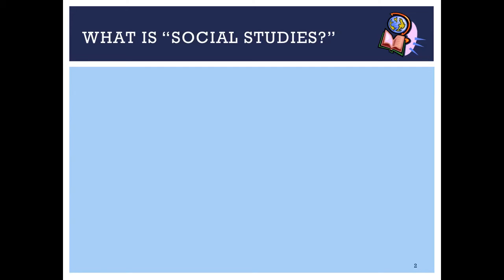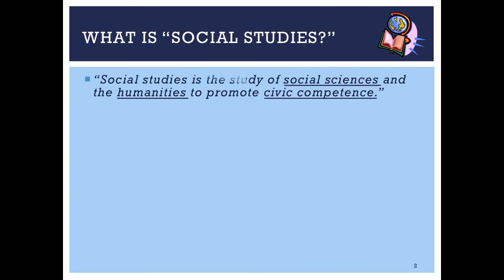The first question we put on the left side of the line for our Cornell notes is: what is social studies? I asked this as a learning log question a couple days ago. You are in a class called Social Studies 6. The dictionary definition is not something the average sixth grader is going to understand, but I'll read it anyway: social studies is the study of social sciences and the humanities to promote civic competence. We've got three important terms there: social sciences, humanities, and civic competence.